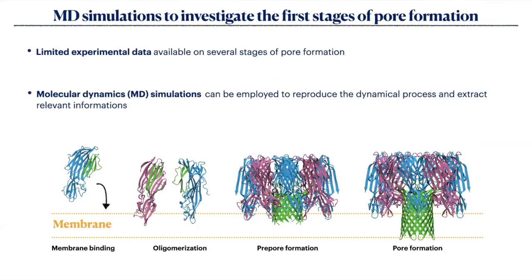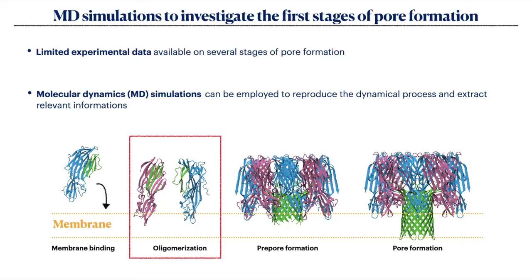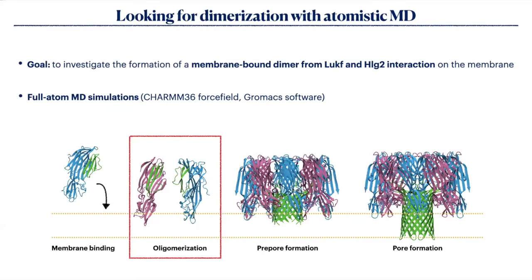Unfortunately, only several stages of this process have been captured by experiments. Molecular dynamics simulation can complement experiments by reproducing the dynamic process, allowing us to extract relevant information — for example, about the sensing mechanism, interactions, and conformational changes of the toxin. My aim is to study the formation of a membrane-bound dimer from the interaction of the two components on the membrane, and to do this I'm employing full atomistic molecular dynamics simulations. The problem is that we lack proper experimental structures of the bound dimer for comparison, and it's also difficult to know where to start.